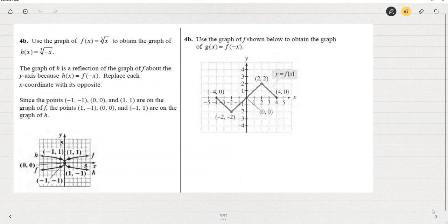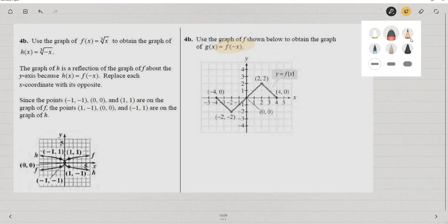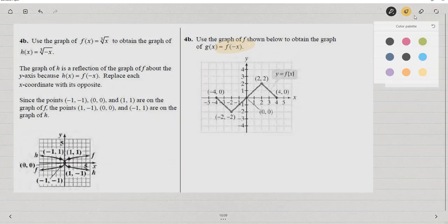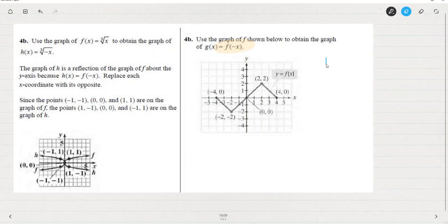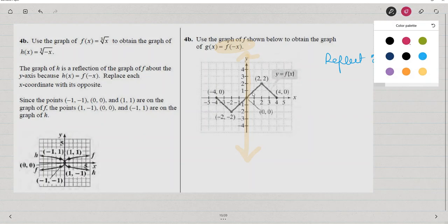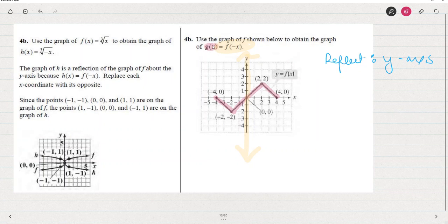This one's a little bit more complicated, so let's do this carefully. Use the graph of f shown to obtain the graph of f of the opposite of x. So if we have f of the opposite of x, we're going to reflect about the y-axis. Let's make sure everyone's clear with where the y-axis is. Here's the y-axis.